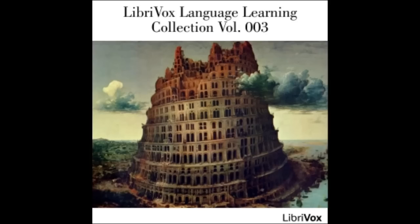Lesson 22 vocabulary — Dead: masculine νεκρός, feminine νεκρά, neuter νεκρόν. Silver/money: masculine ἄργυρος. Poverty: feminine πενία. Talent: neuter τάλαντον. Gold: masculine χρυσός. Fortune: feminine τύχη. Denarius/penny: neuter δηνάριον. Brother: masculine ἀδελφός. Sister: feminine ἀδελφή.